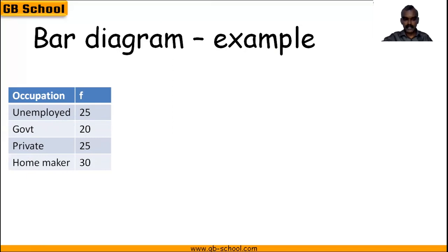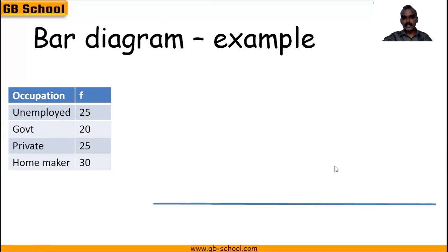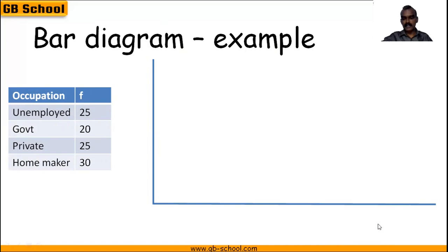Now we have to construct a bar diagram for this given data. The first step is to draw the x-axis, then draw the y-axis, then label the x-axis. Here we are going to mark occupation on the x-axis, and the y-axis is going to represent frequencies. So labeling is done.